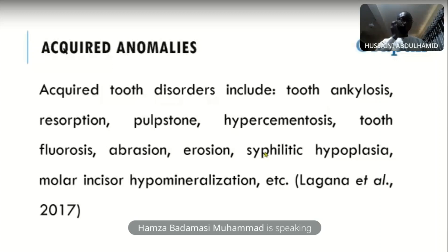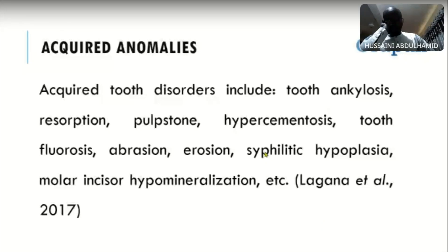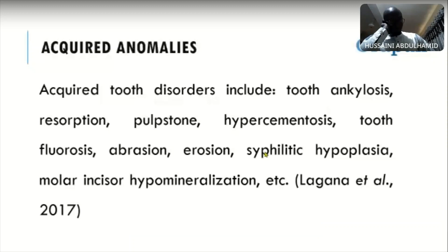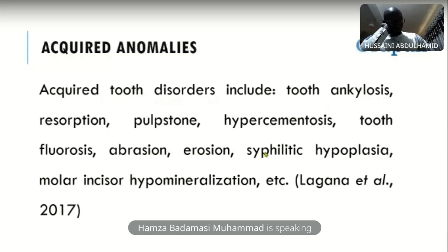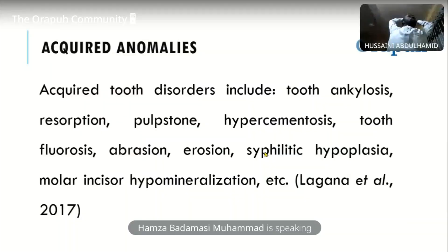Another example is tooth resorption, which is a dental injury or irritation that causes loss of part of a tooth or even the tooth as a whole. We also have pulp stones, which are nodular calcified masses appearing on either the coronal or root portion of the pulp of a tooth. Abrasion involves the loss of enamel due to mechanical actions from outside the tooth, and erosion is the loss of the surface of the tooth as a result of acids being consumed.